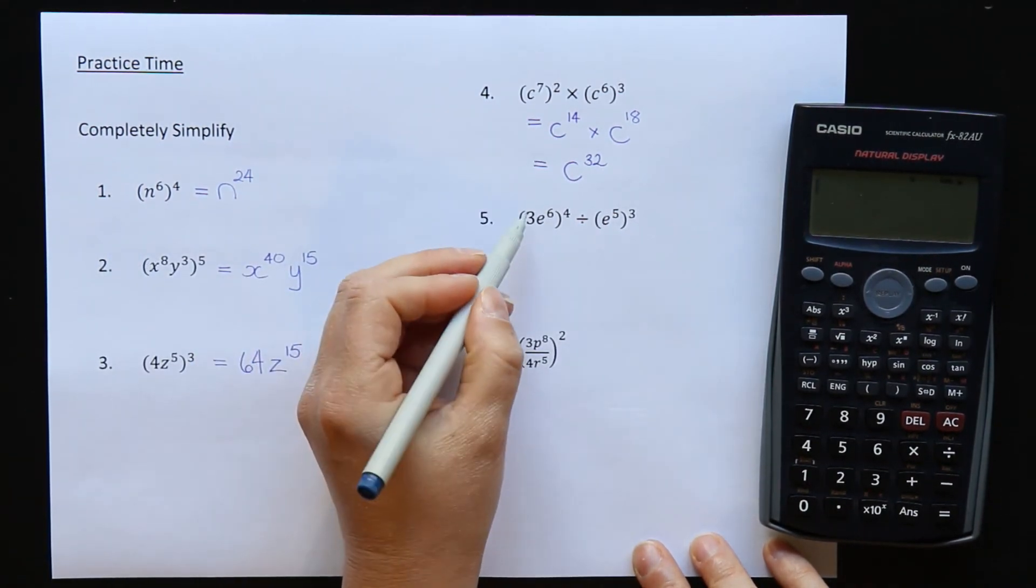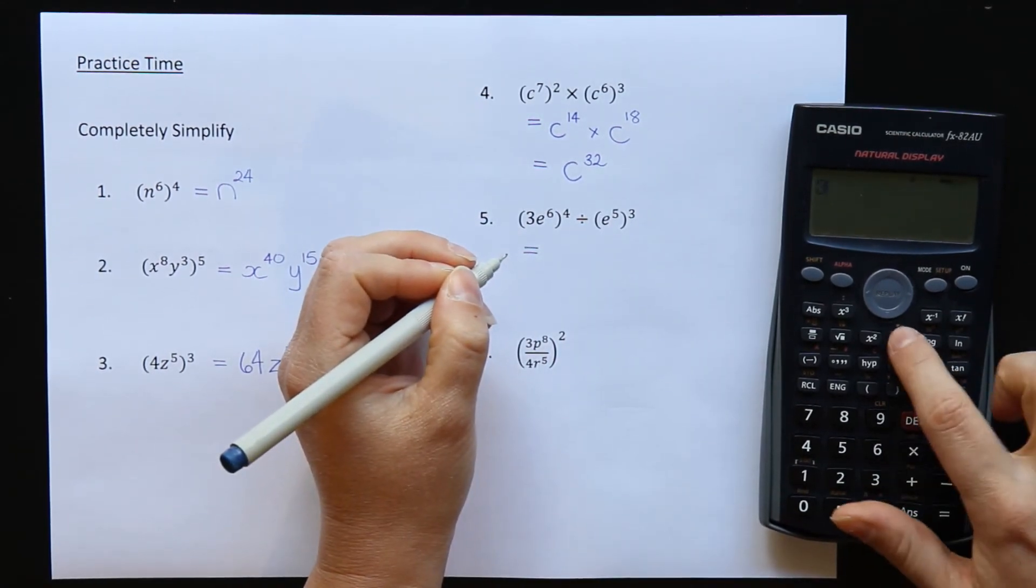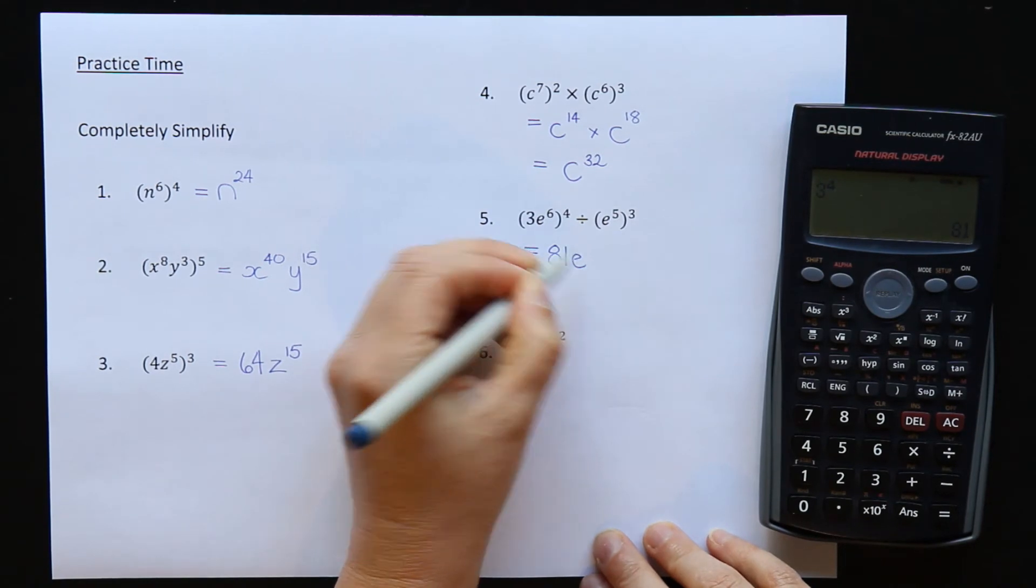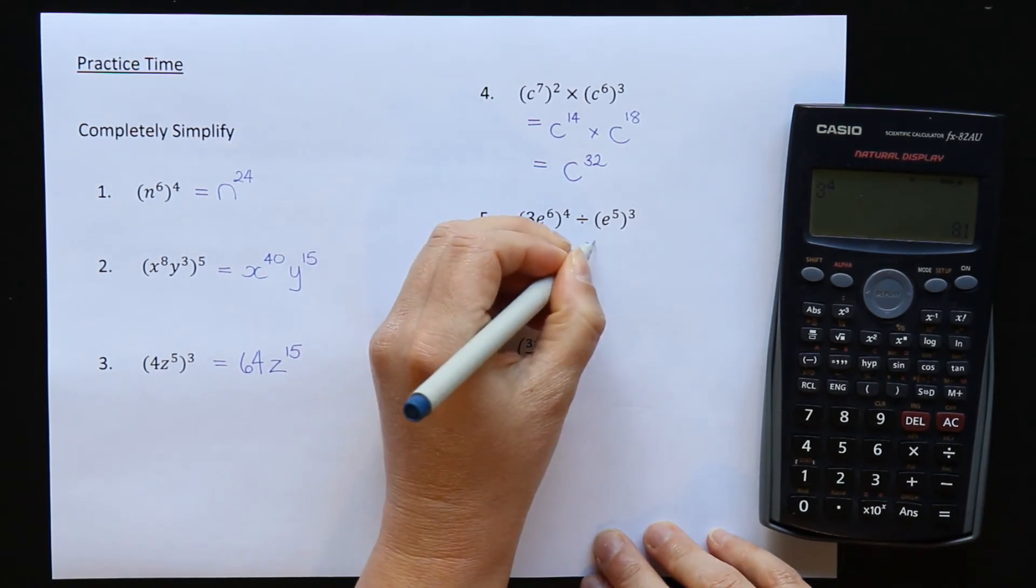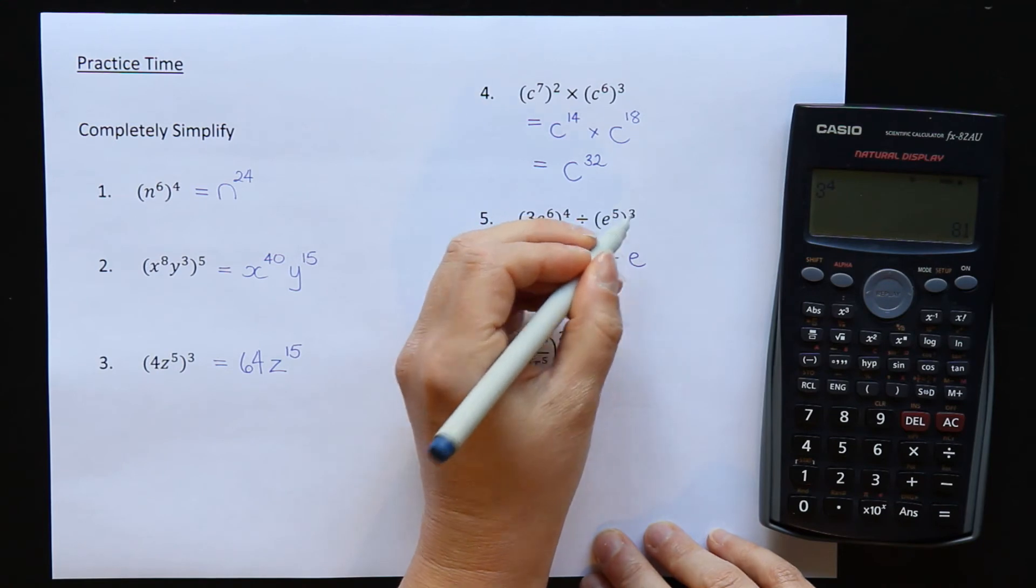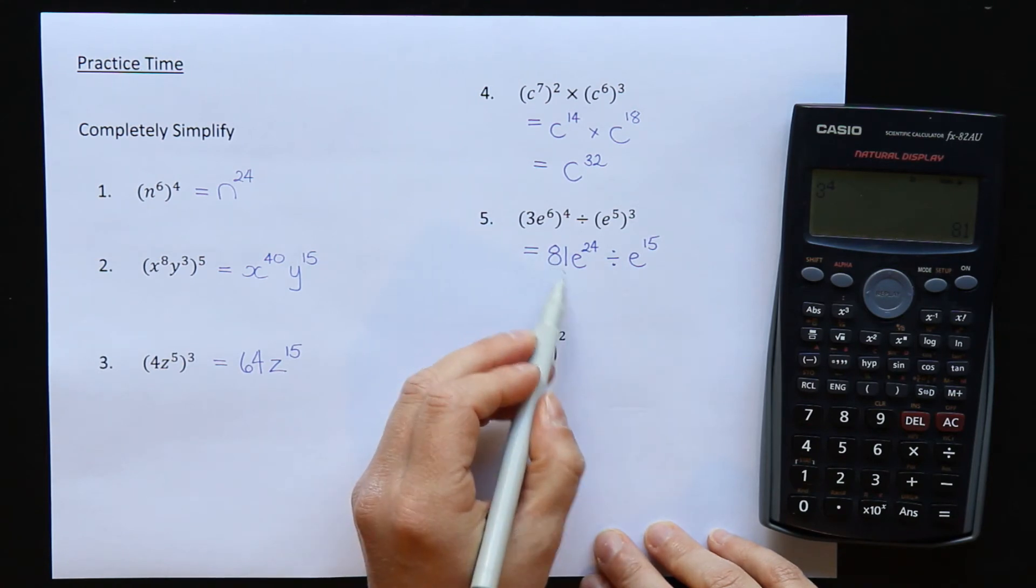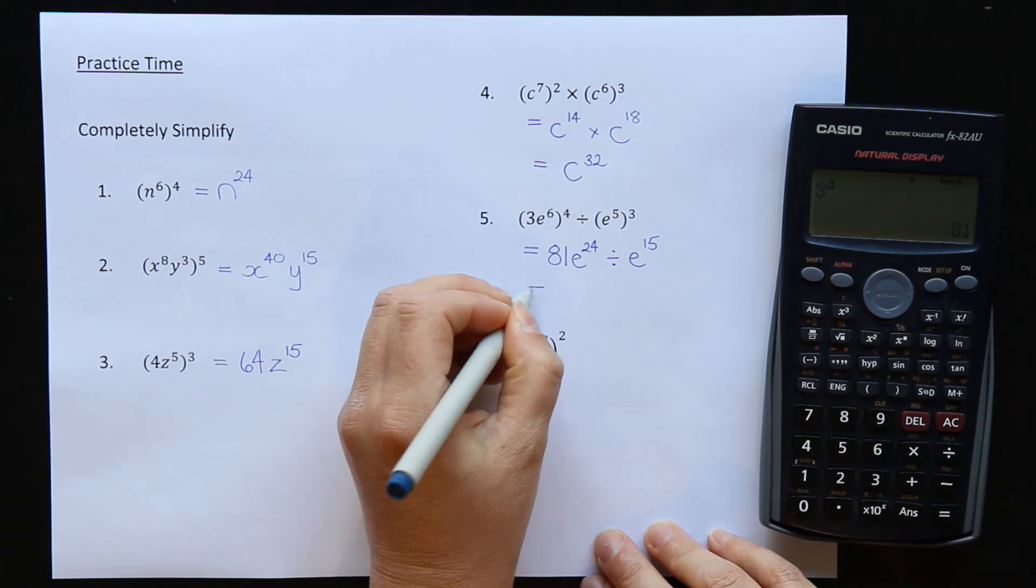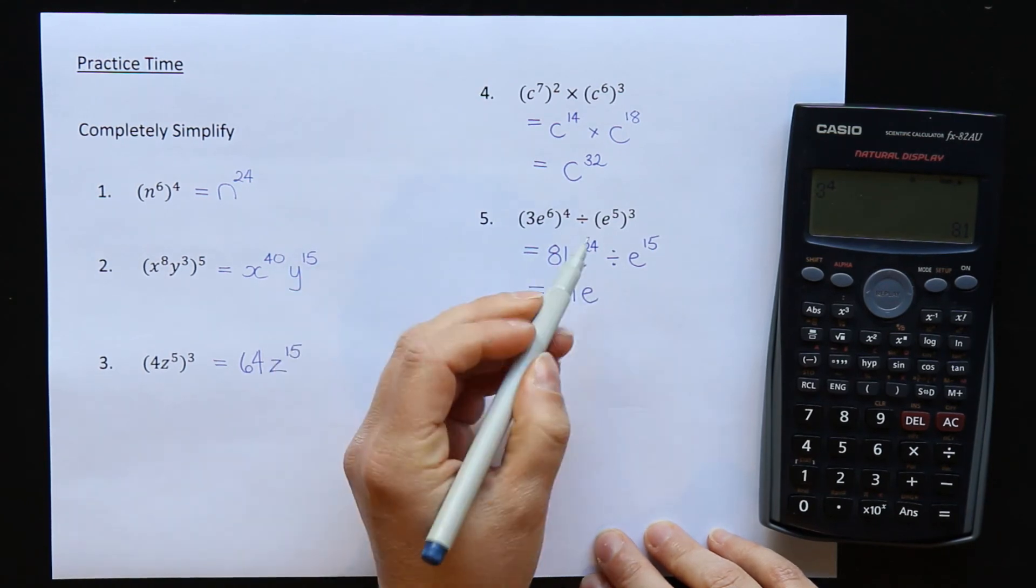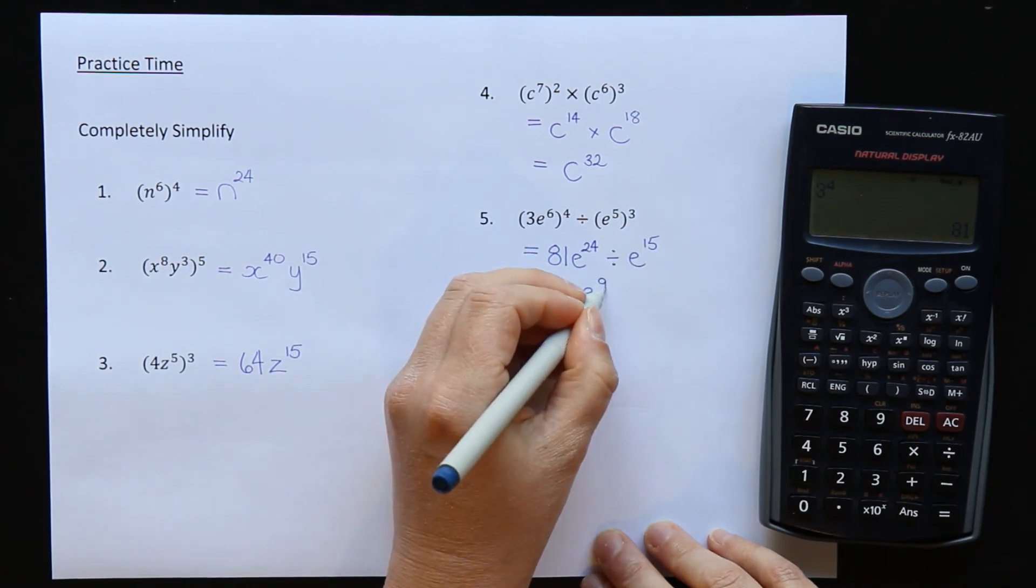Okay question 5, 3 to the power of 4. All right let's see what that is. 3 to the power of 4 is 81. E is the base, multiply 6 times 4 is 24. Then I want to divide that by E to the power of 5 times 3 is 15. To divide these we have to divide any big numbers at the front first but there is only the 81 here so it's not going to change. 81 will still stay there. The E will come next and when we divide we have to subtract the powers. So 24 minus 15 is 9.